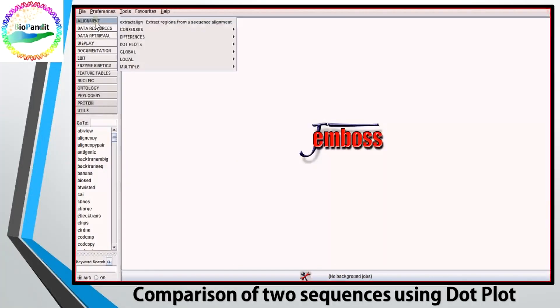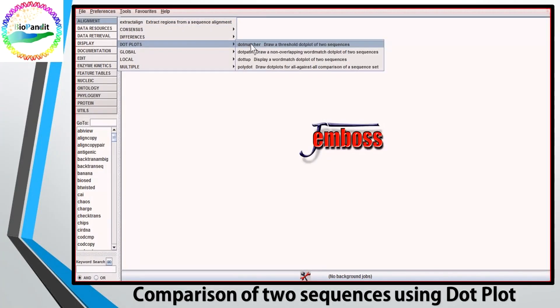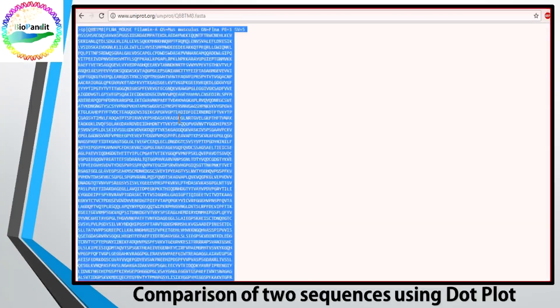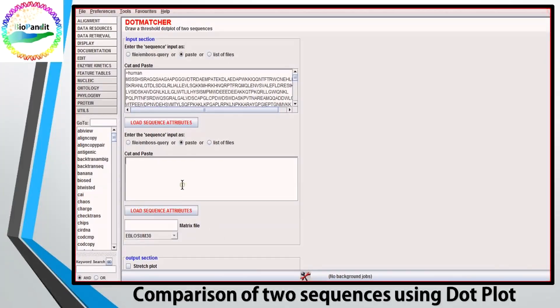Now let me perform the same operation for mouse. Now we need our dot matcher program. It is implemented in the EMBOSS package. The method is very simple. Two sequences are needed. You can either browse your sequence file or simply copy and paste your sequences.